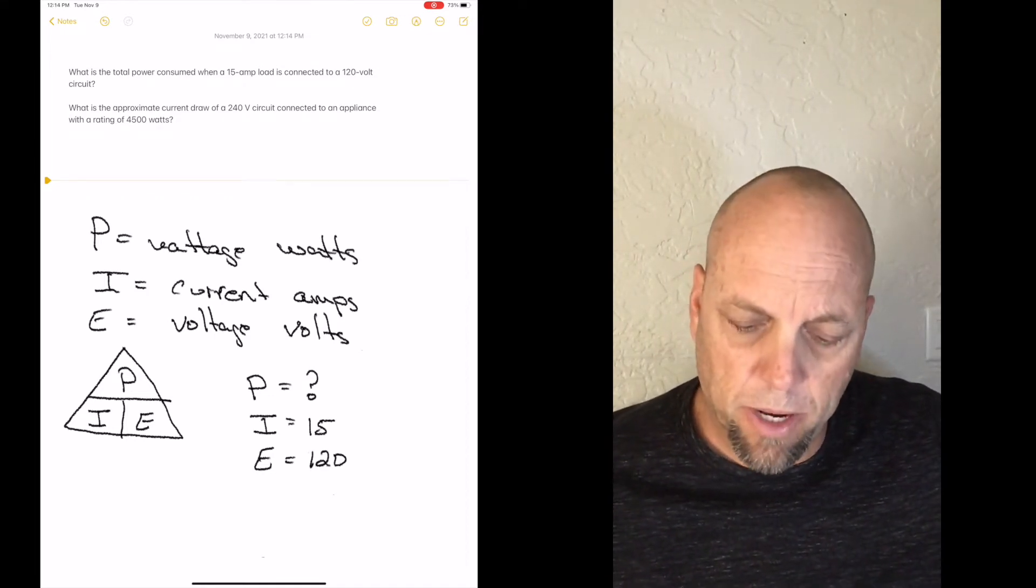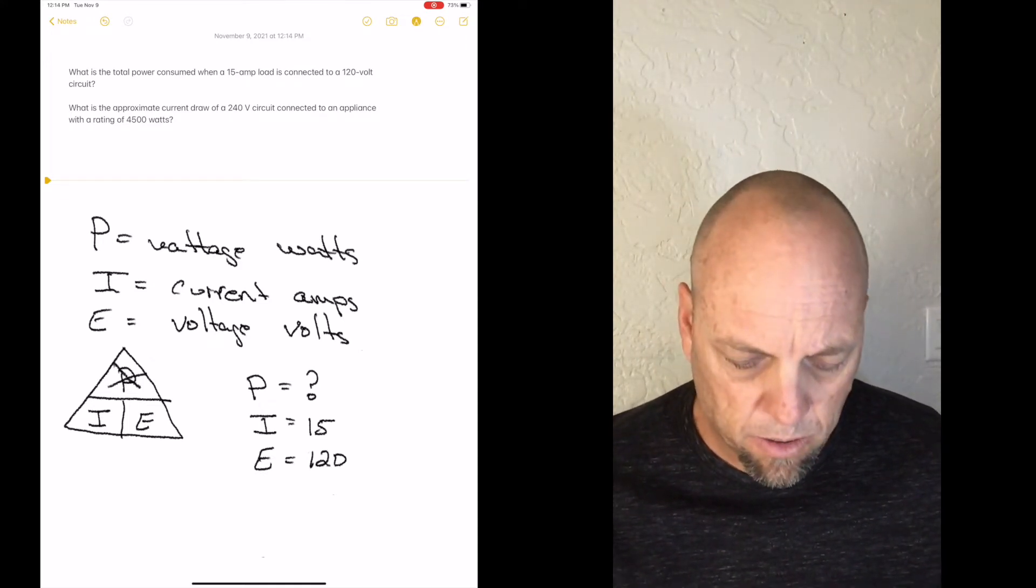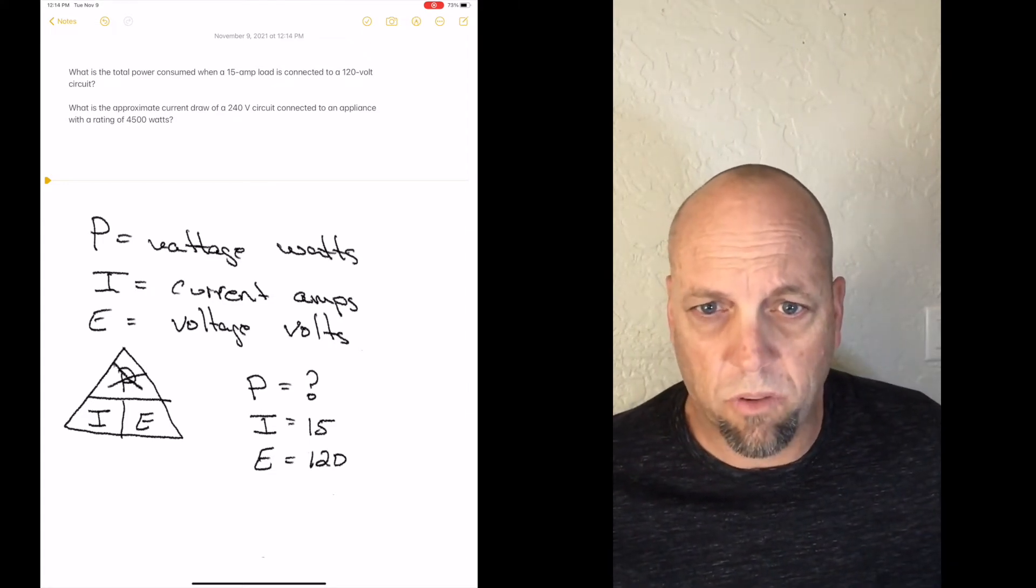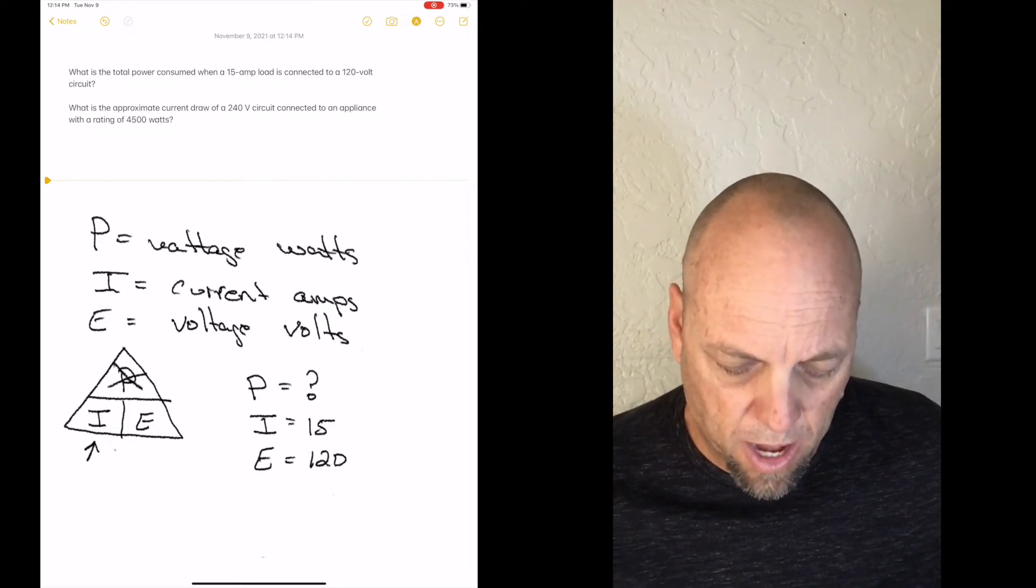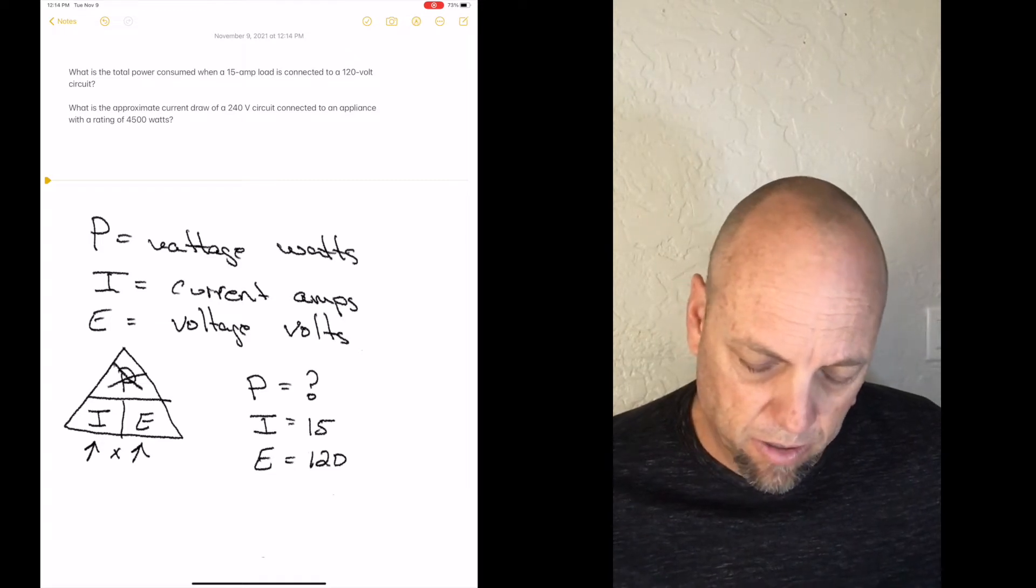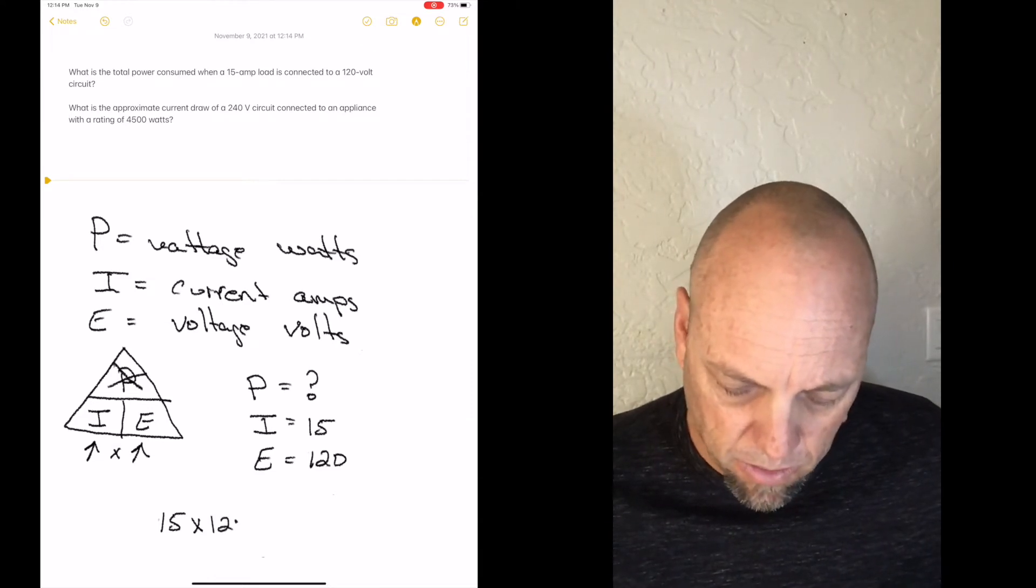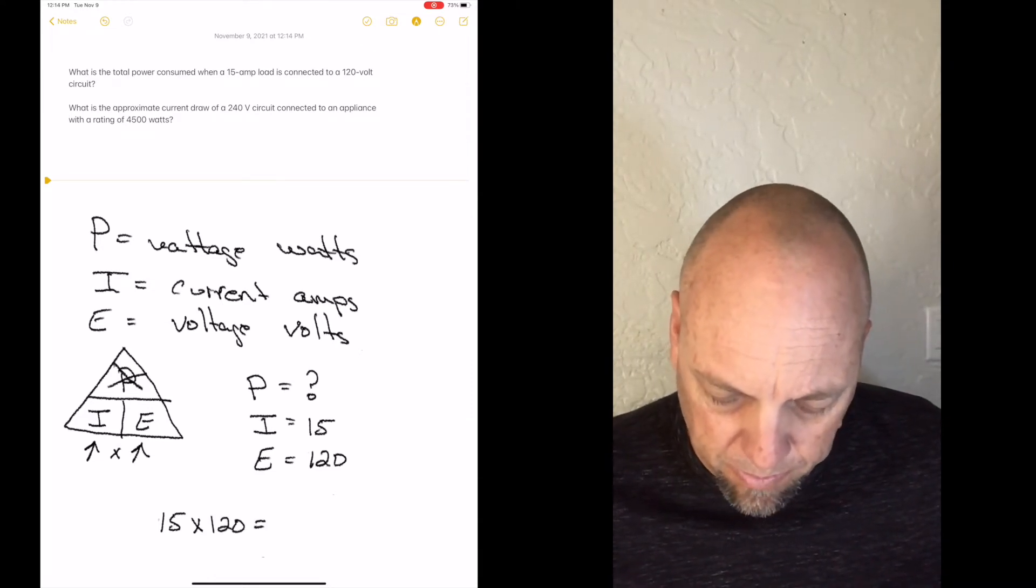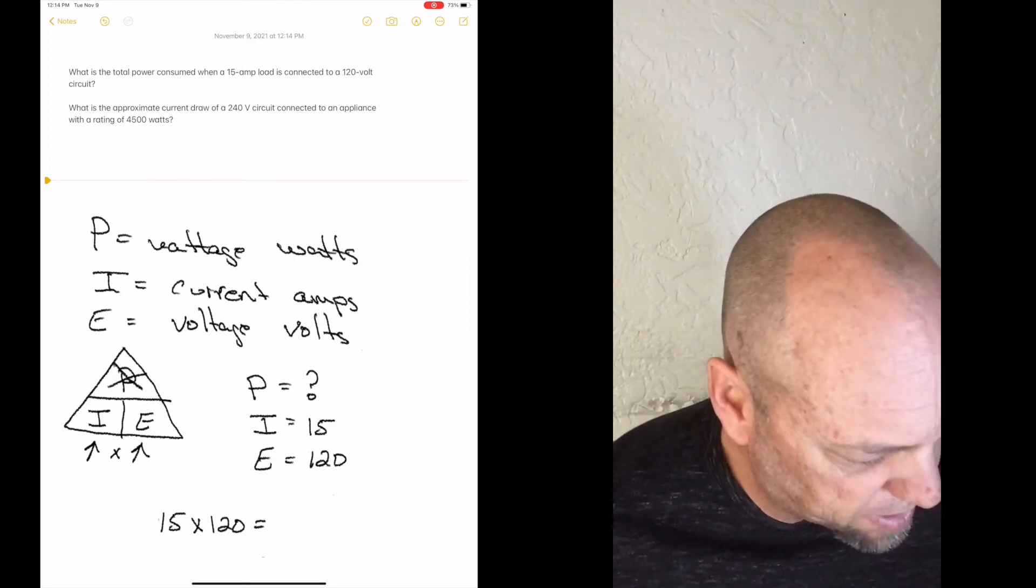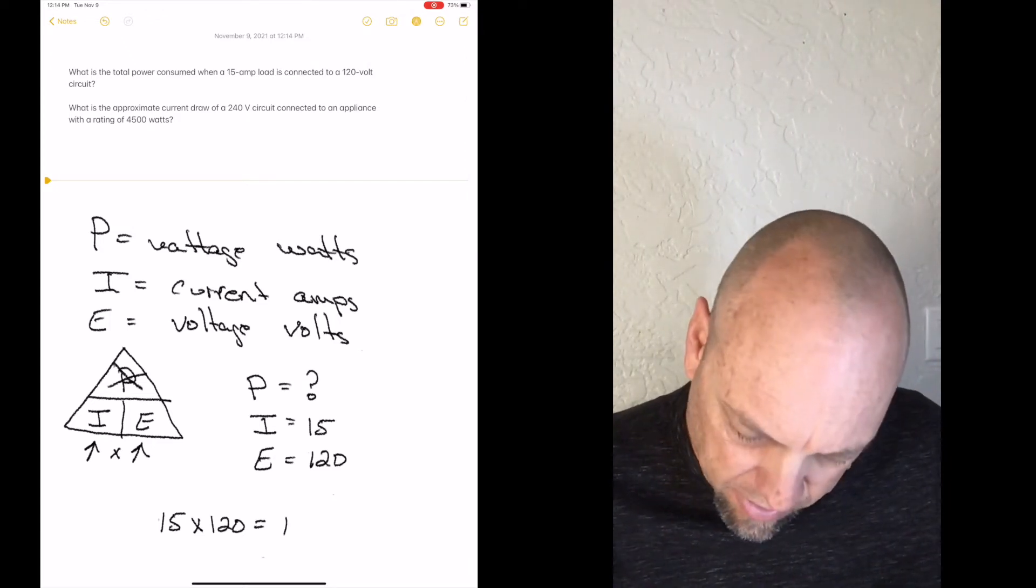So with that information, we can come down here. Cover up on our triangle here. We can cross out the P because that's what we're looking for. And then we're left with I times E right here. So I at 15 times E, which is 120, equals P, which is the wattage that we use. So the power consumption there,